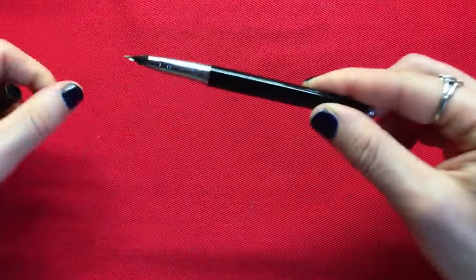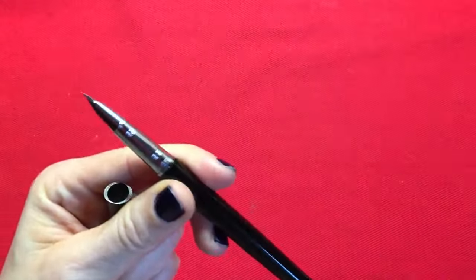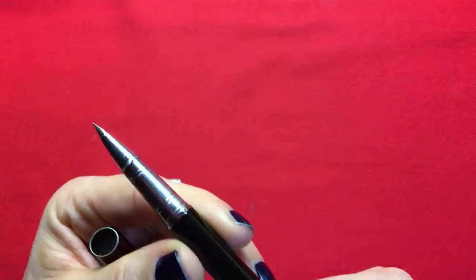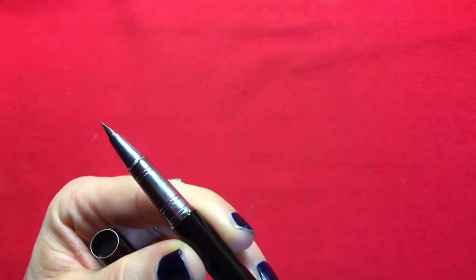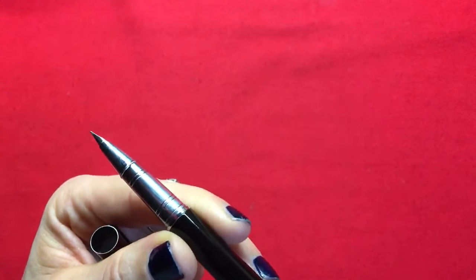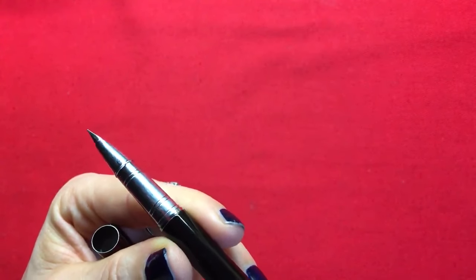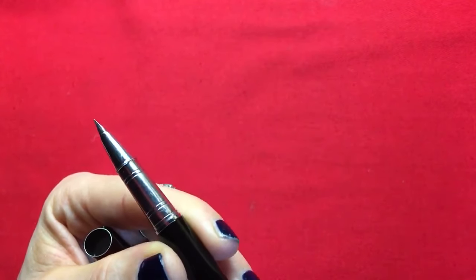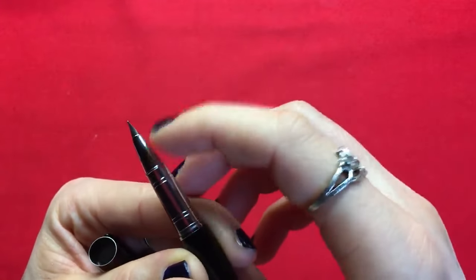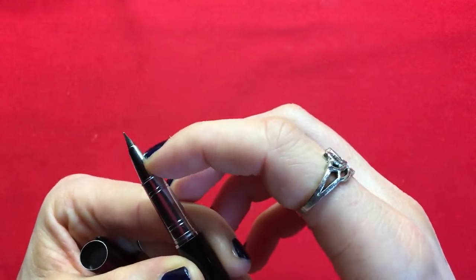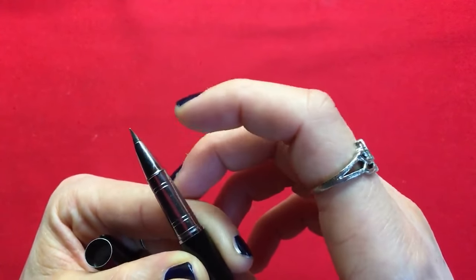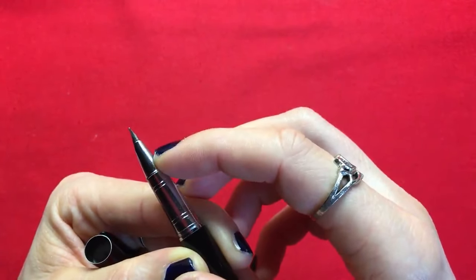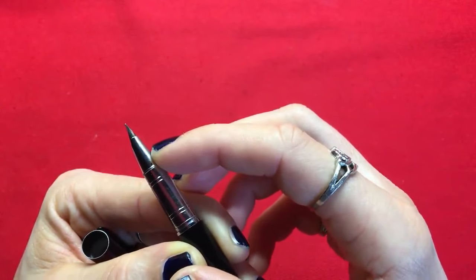It came originally with an iridium nib which was okay, it was an F size nib. But it happened that I had another pen which needed the same kind of nib, so I took it off, put it into another pen, and this pen got a nib from a Baoer fountain pen.